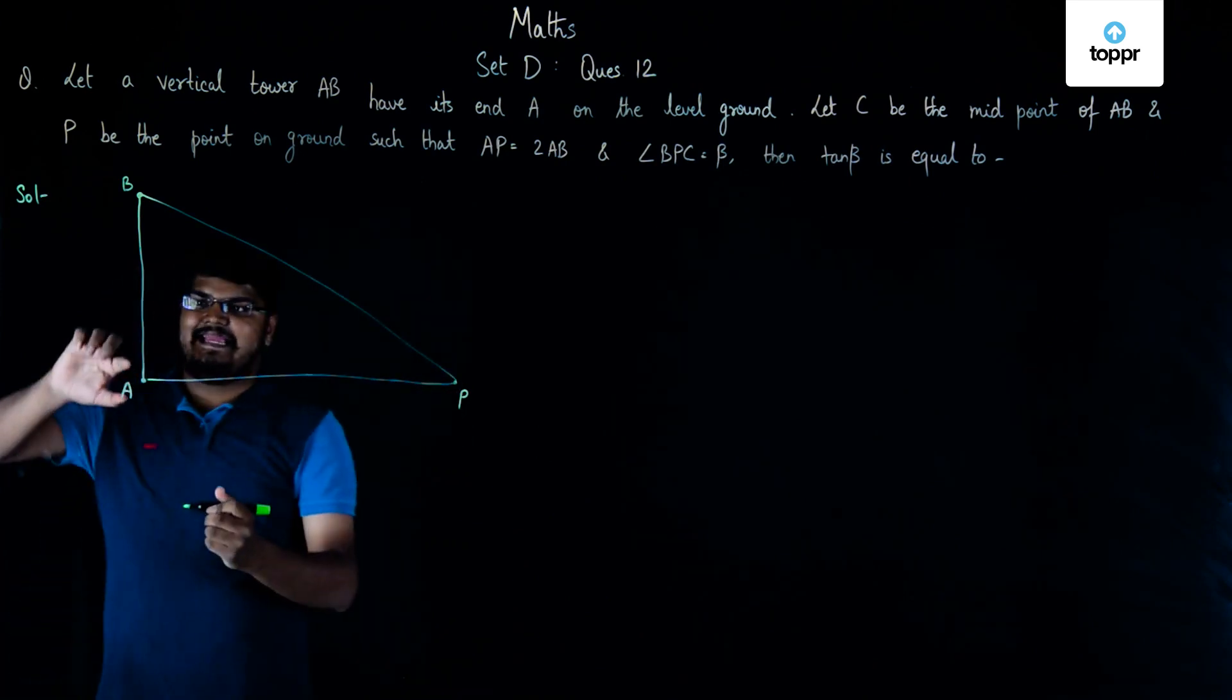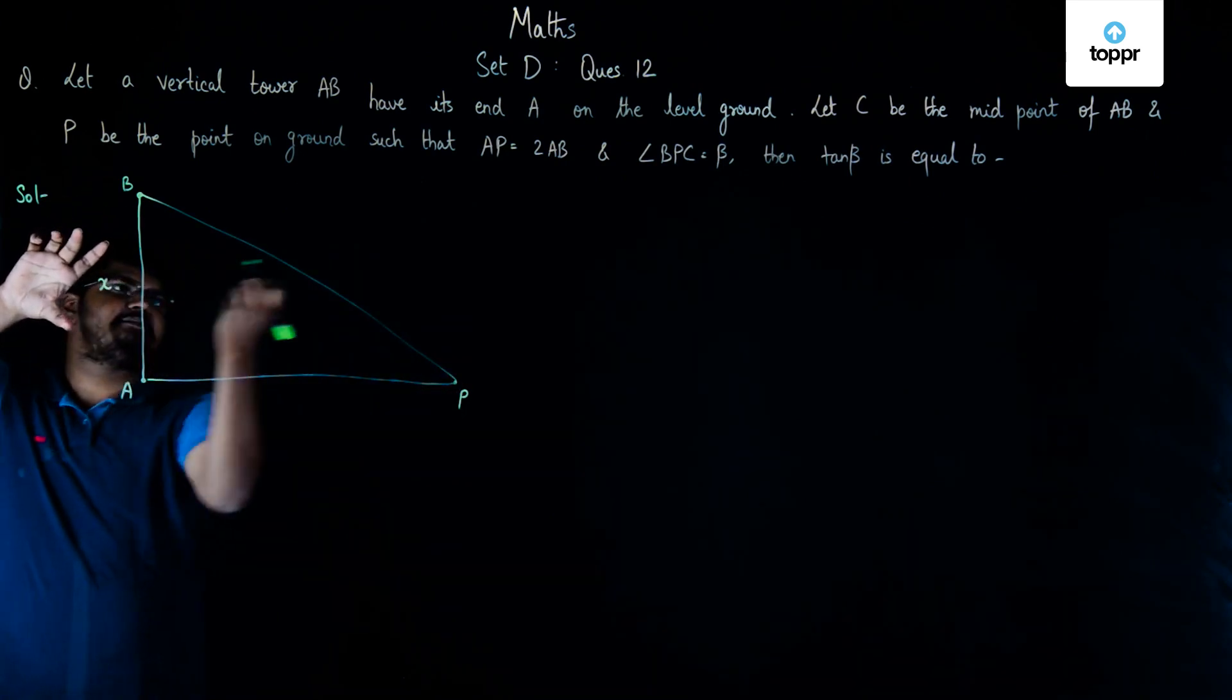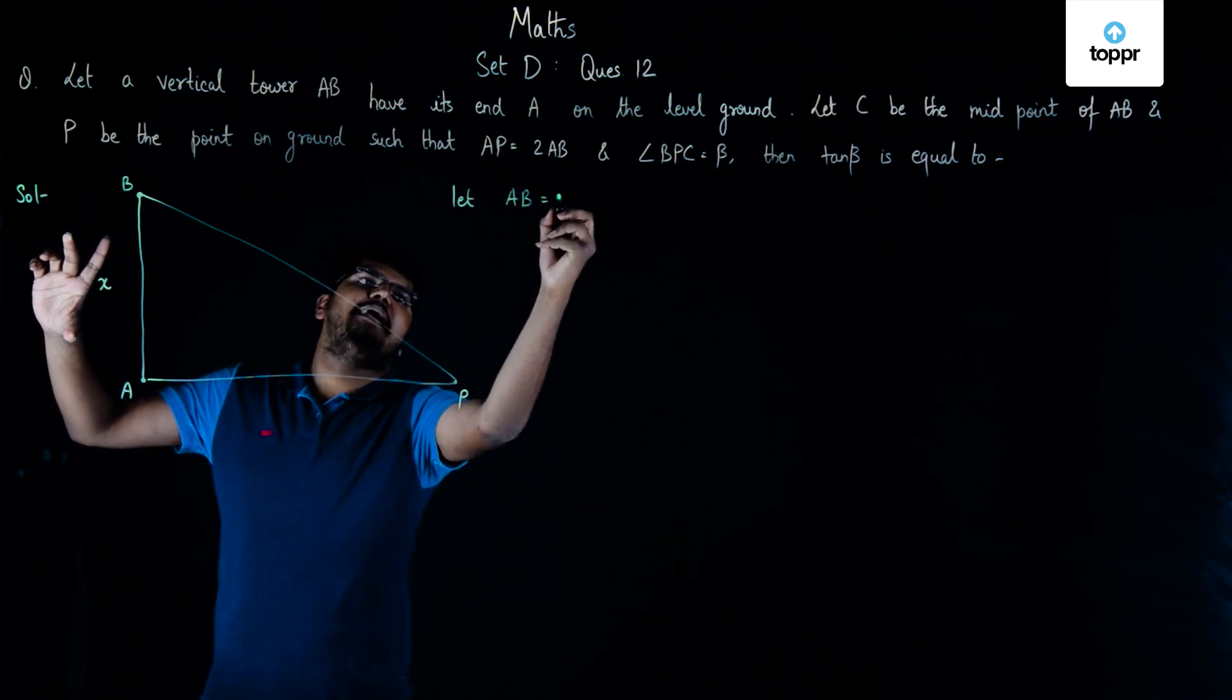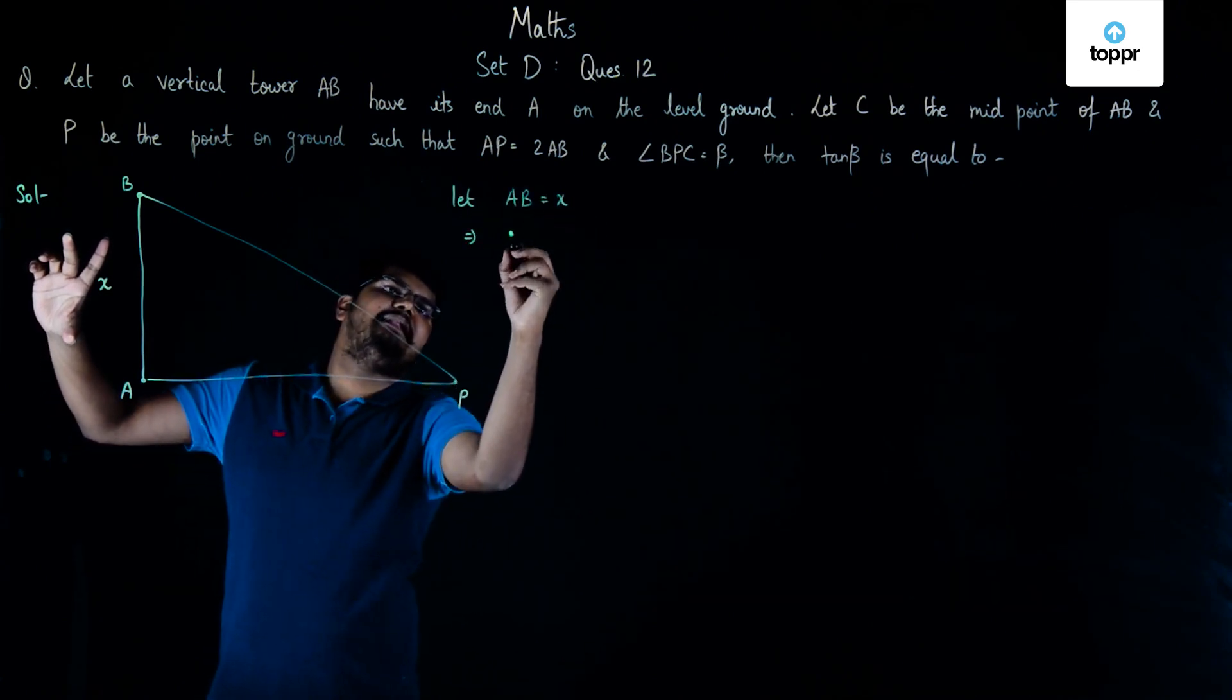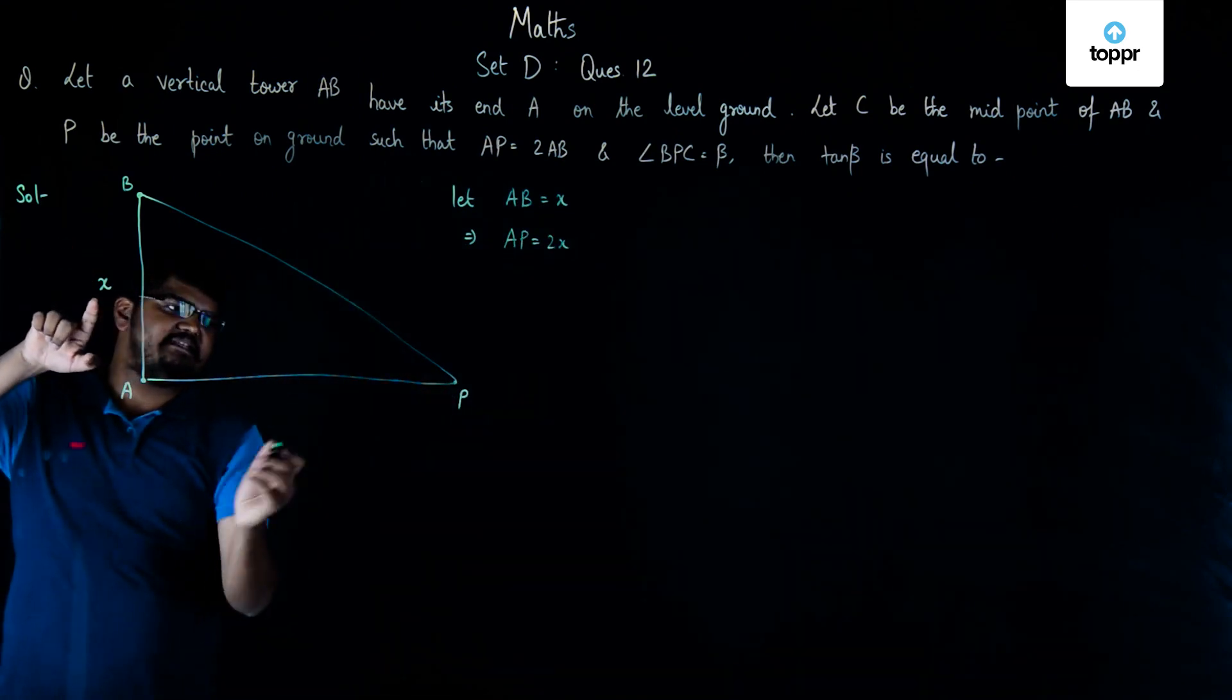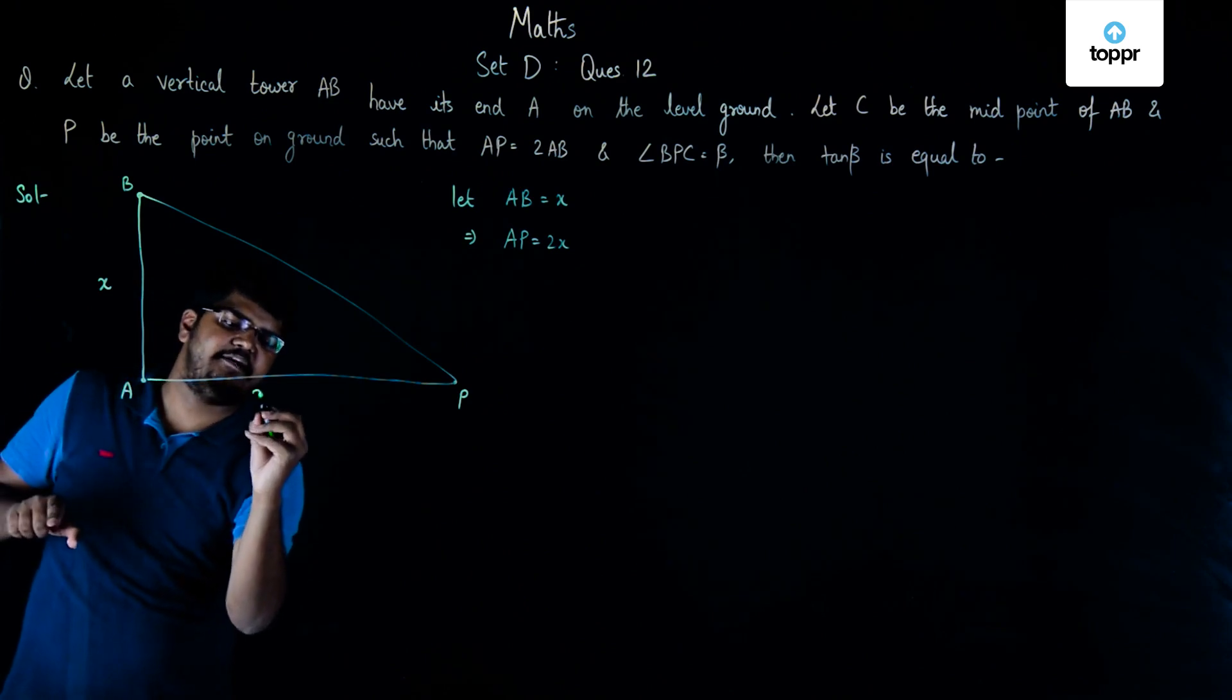We can say that if AB is equal to X, so let AB is equal to X, then this will imply that AP is equal to 2X. As we've already seen that if this is X and this is twice of it then it will become 2X.